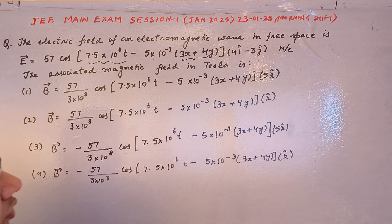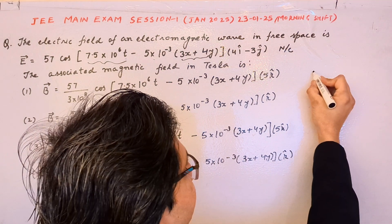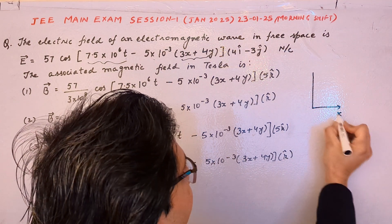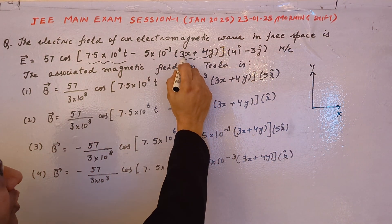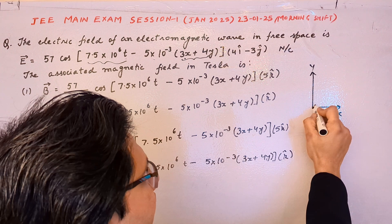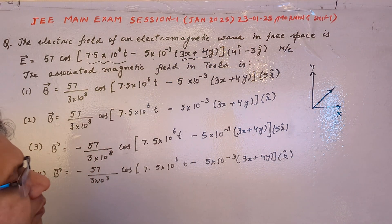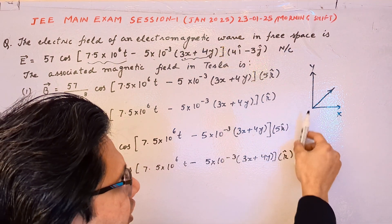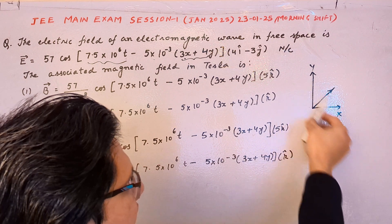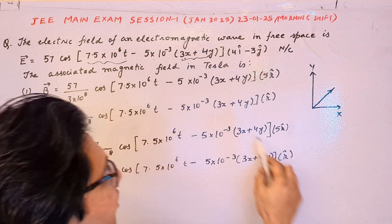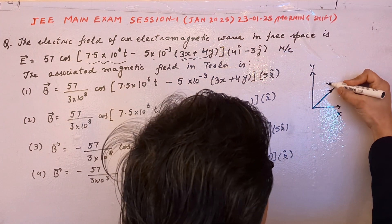The term 3x + 4y denotes the direction of the electromagnetic wave. In the xy-plane, with x-axis and y-axis, 3x + 4y means the wave is propagating in a direction that is neither along x nor along y, but in between — it is in the xy-plane. So 3x + 4y denotes the direction of propagation.